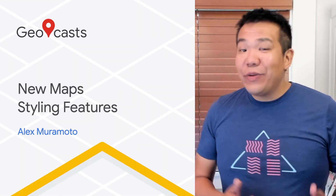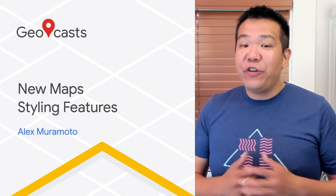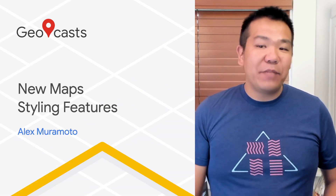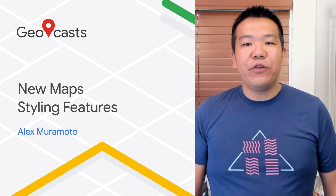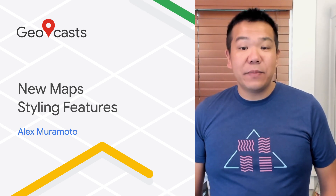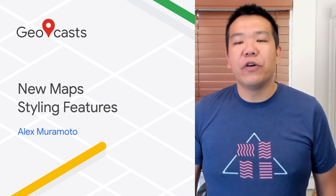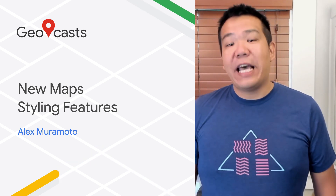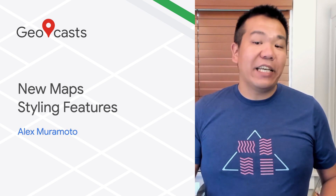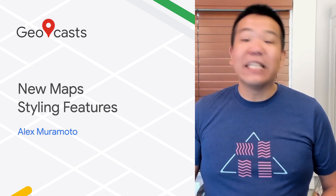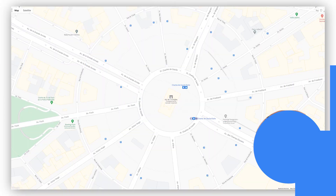Hey, Mapheads. We recently added three new features to cloud-based map styling to give you even more customization and control over the map: Landmarks, building footprints, and detailed street maps. Let's take a look.